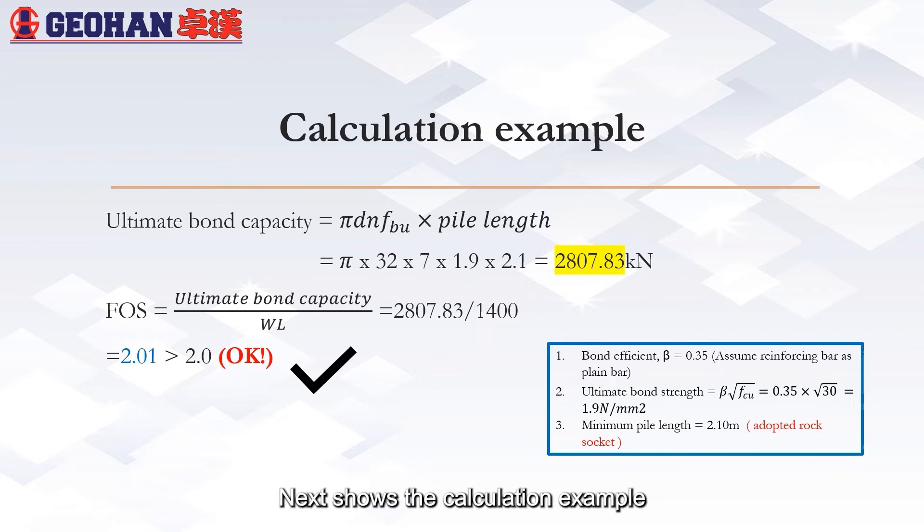Here shows the calculation example. Bond coefficient is equal to 0.35 by assuming reinforcing bar as plain bar. Ultimate bond strength is then determined as 1.9 newton per millimeter square. The ultimate bond capacity is then calculated and is applied to determine factor of safety against bond length. The factor of safety obtained is said to be passed.